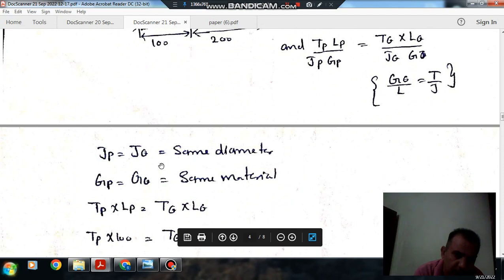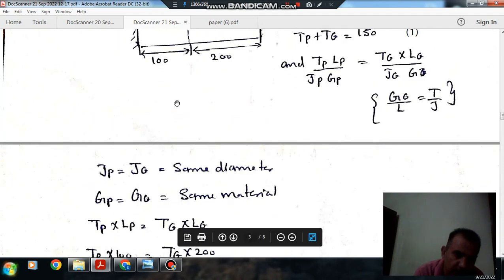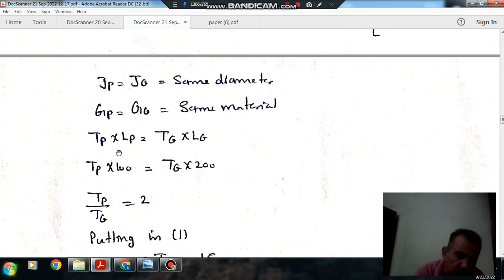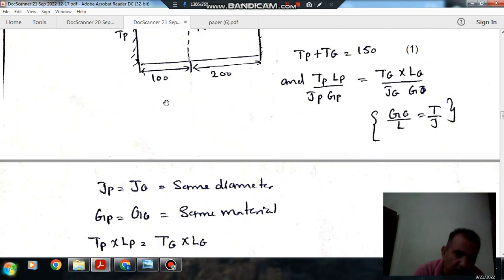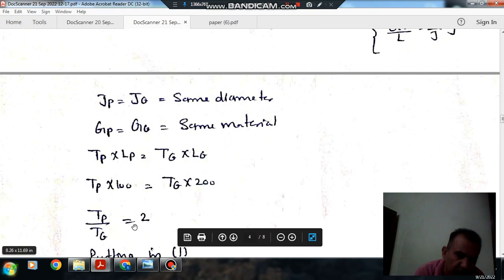As diameter is the same for both portions, J is equal and G is equal. So it means that Tp times Lp equals Tq times Lq. Lp is 100 mm and Lq is 200 mm. So Tp by Tq equals 2.